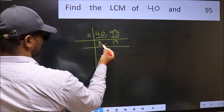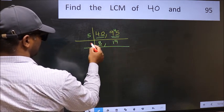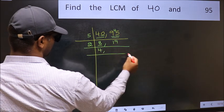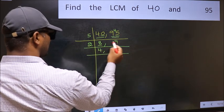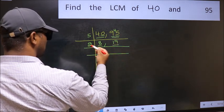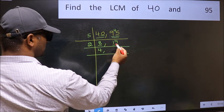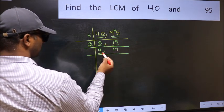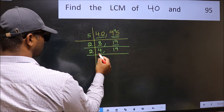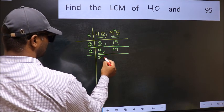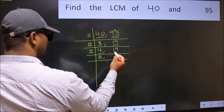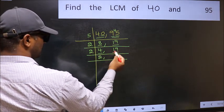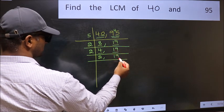Now here we have 8. 8 divided by 2: 2 times 4 is 8. The other number is 19 — not divisible by 2, so you write it down as it is. Now here we have 4. 4 divided by 2: 2 times 2 is 4. The other number 19 is not divisible by 2, so you write it down as it is.